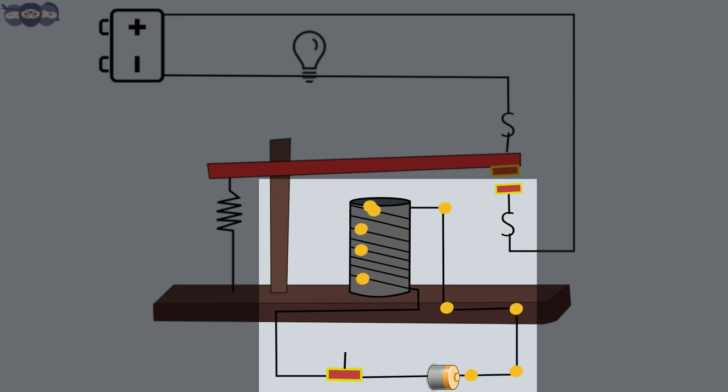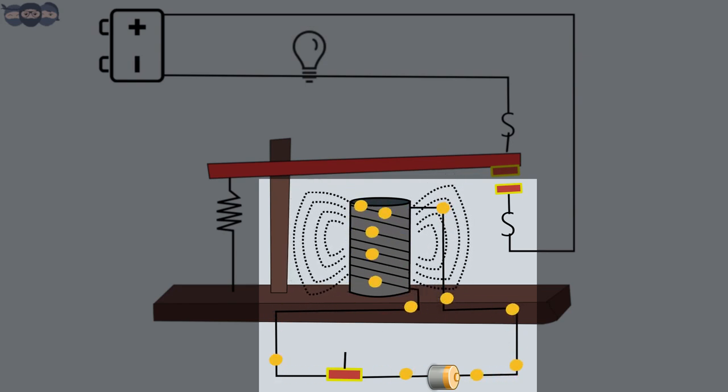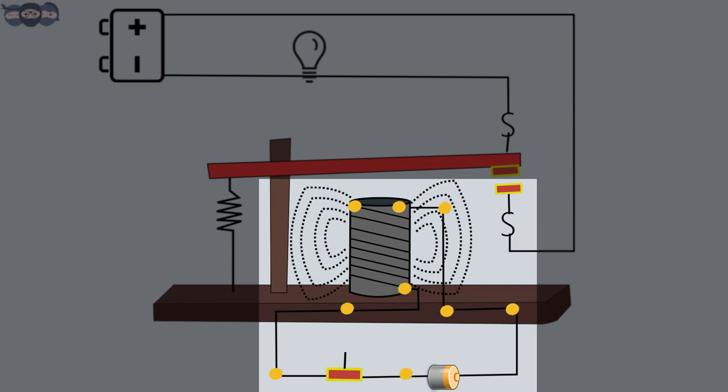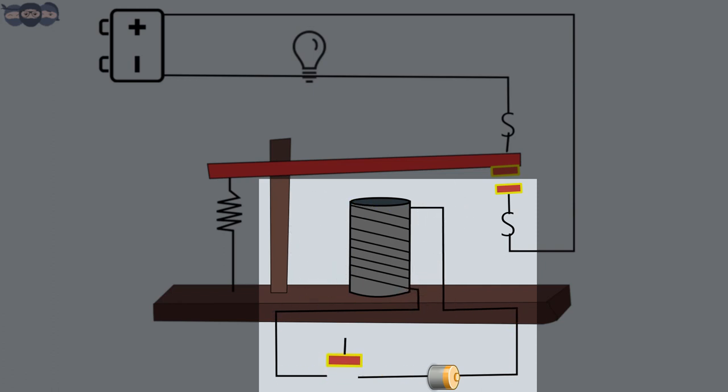When current flows, it energizes the coil and creates a magnetic field. Electromagnets are useful because you can turn the magnet on and off by completing or interrupting the circuit.